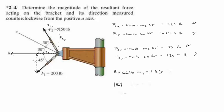Now, to find the magnitude, all you have to do is use the Pythagorean theorem: 216.4 squared plus 11.5 squared, and you square root that to get 216.7. And to get the angle, you use the inverse tangent of the y component divided by the x component — 11.5 over 216.4 — which gives negative 3.04 degrees.